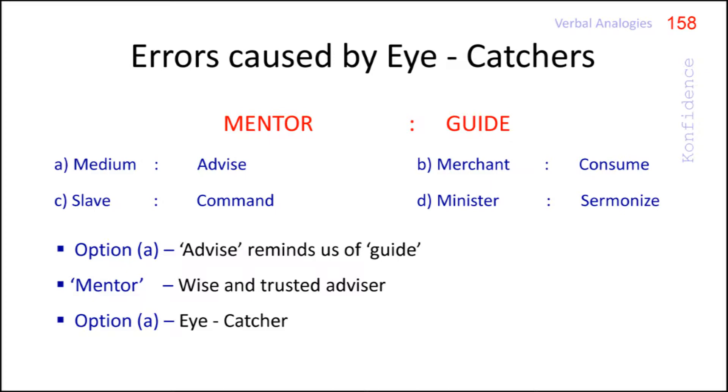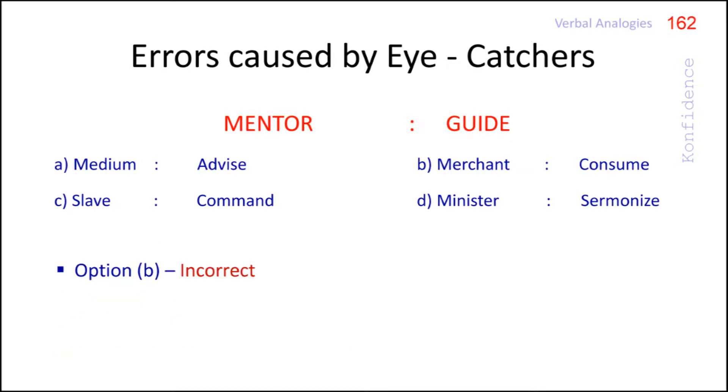To know this, consider the other word in the pair, that is medium. Medium is a channel of communication between the living and the dead. So medium does not advise anyone. Option B is also incorrect because merchants do not consume. They buy and sell goods that others consume.